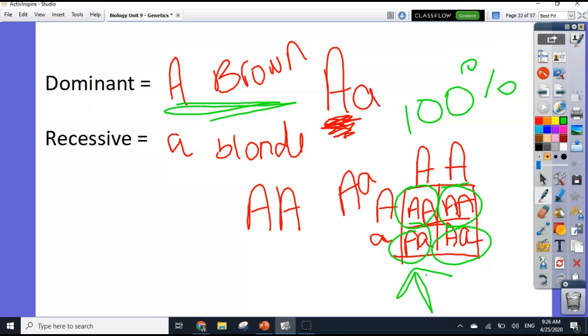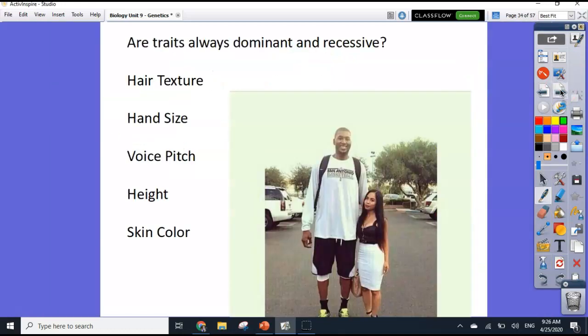Now, we're going to look today at traits that don't necessarily follow this rule. So let's think about some traits here. If I have a really tall person that marries a really short person, if we think about this normally, like let's say we have a big A represents tall and a little A represents short. How tall do you think those kids are going to be?